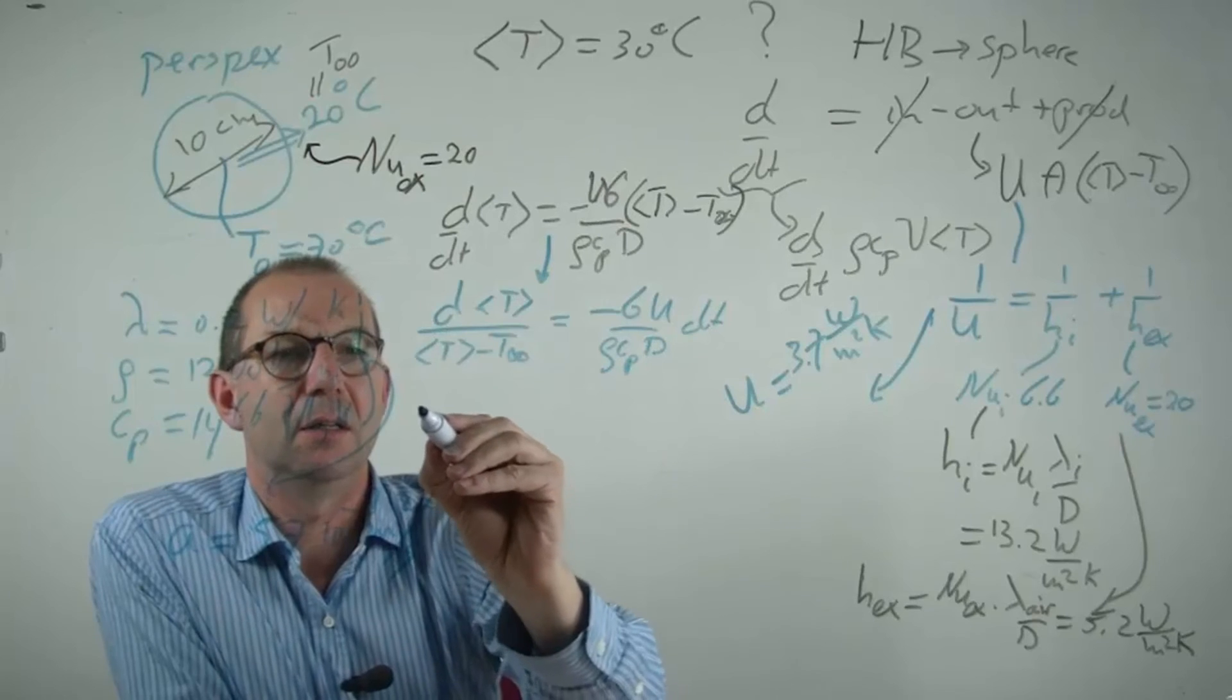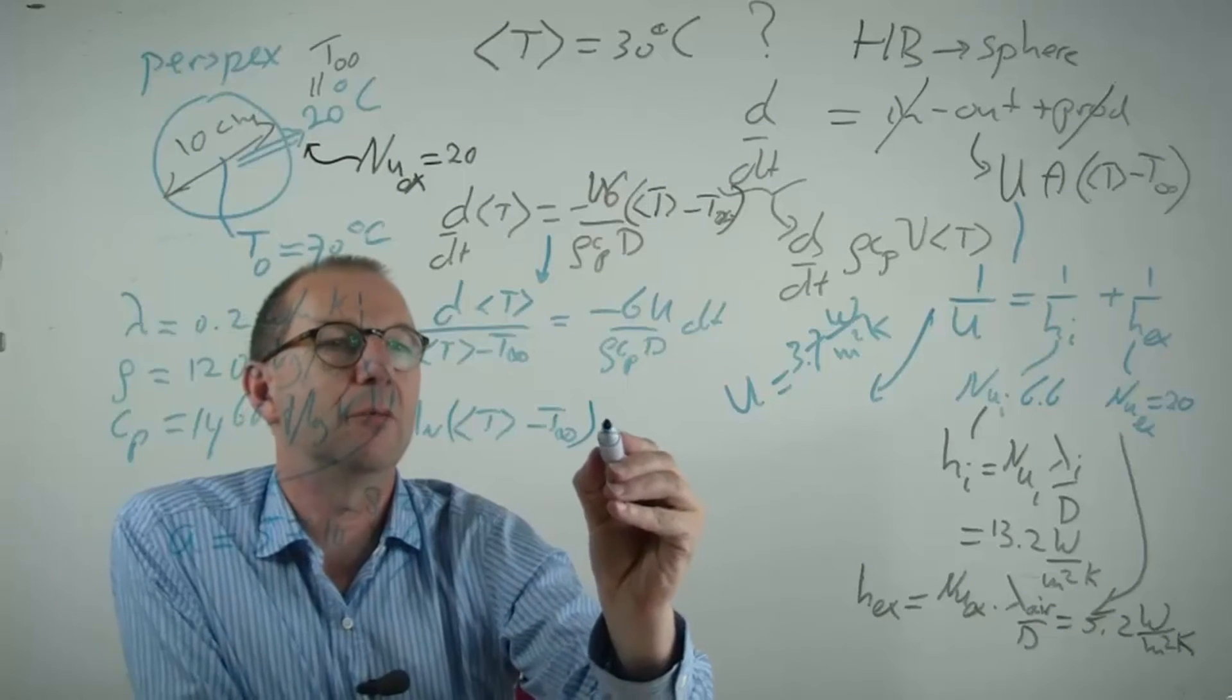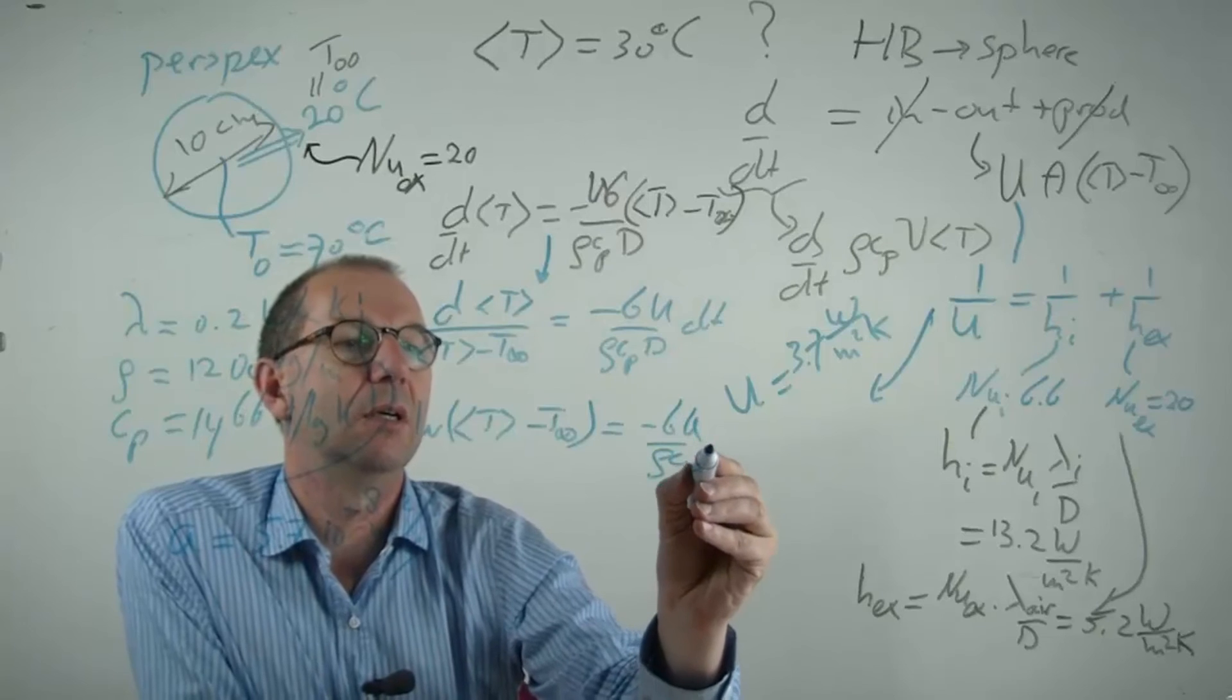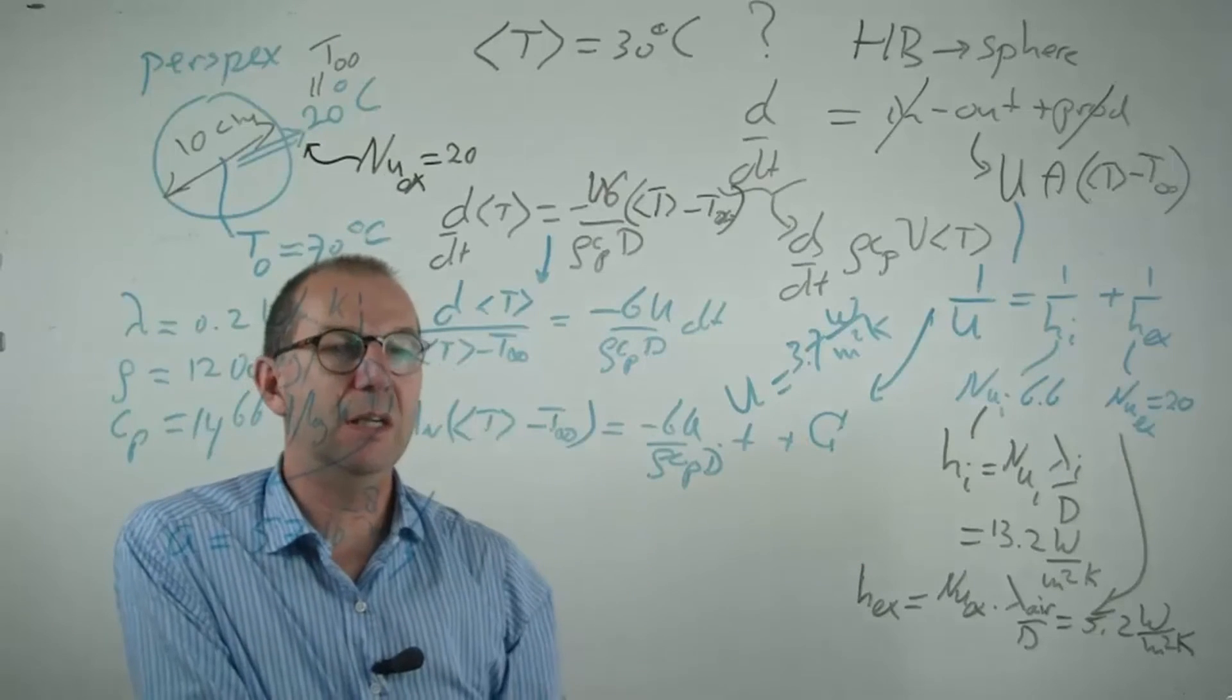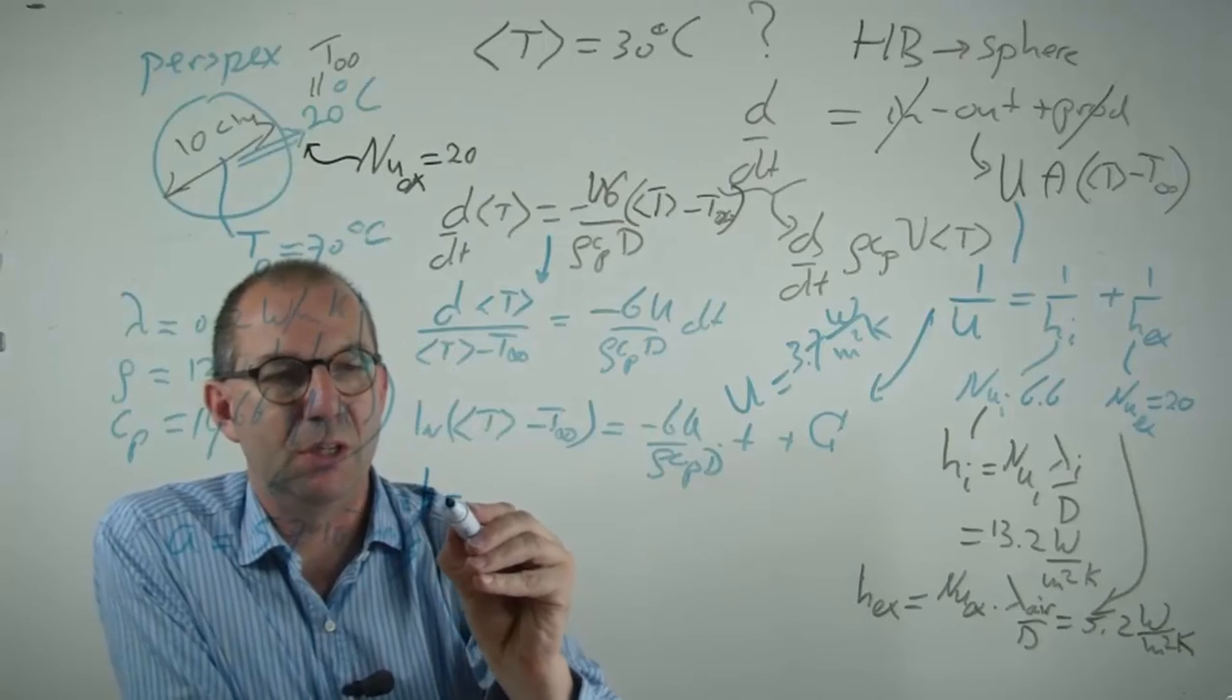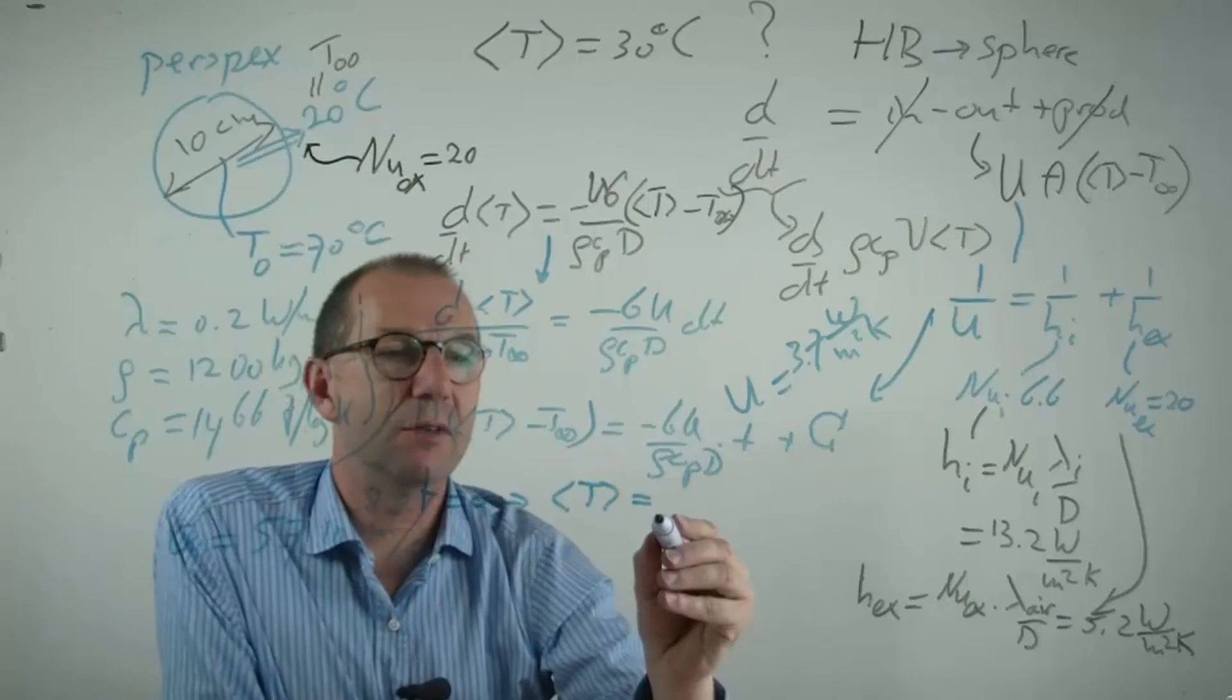Solution being logarithm of the temperature drop equals minus 6U over ρ, Cp, D times t plus an integration constant. I find that from the initial condition at t equals 0. The average temperature is the 70 degrees T₀.